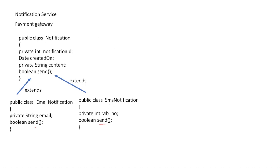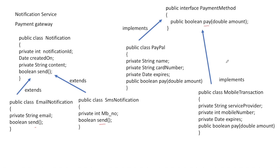Similar to the notification service, we have a payment gateway. We create an interface PaymentMethod with a pay() function taking amount as an argument. We implement this interface in two classes: PayPal and MobileTransactions — though you could add cash or as many implementations as needed. For PayPal, the required information includes name, card number, and expiry date. For MobileTransactions, we need service provider, mobile number, and expiry details.